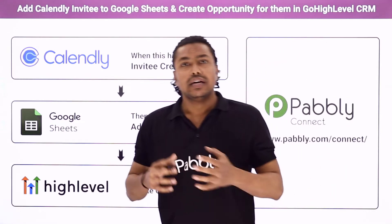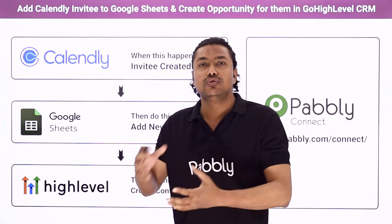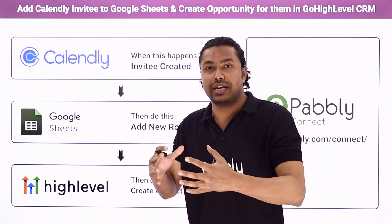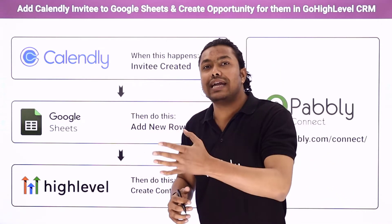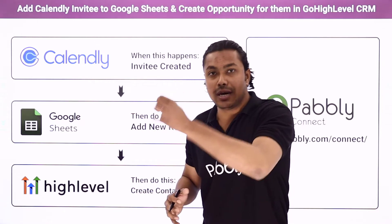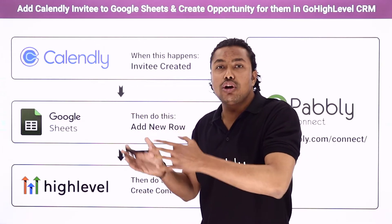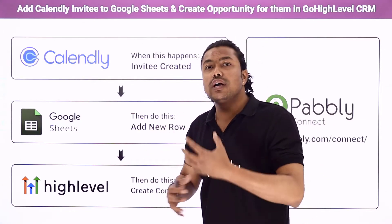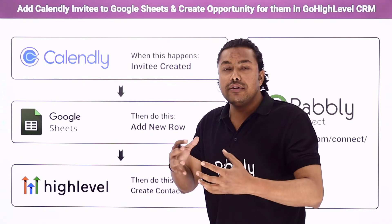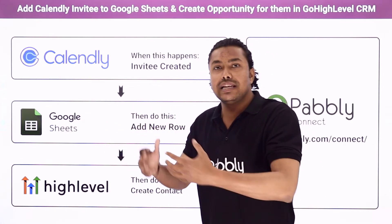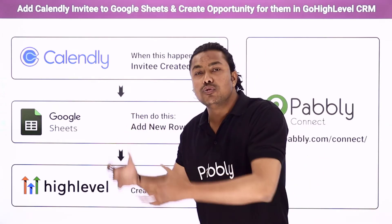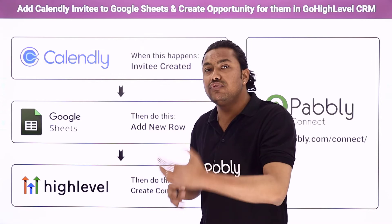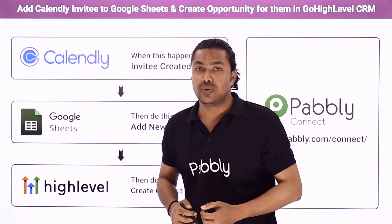Why would you need this automation? Suppose you are running a hospital and your staff is using the Calendly app to make appointments. When people book appointments in Calendly, a new row will be added into a specific Google Sheets and the details will also be sent to your Go High Level CRM account where a new contact will be added. This lets you send promotional messages, inform customers about new doctors or machines, and manage your leads.